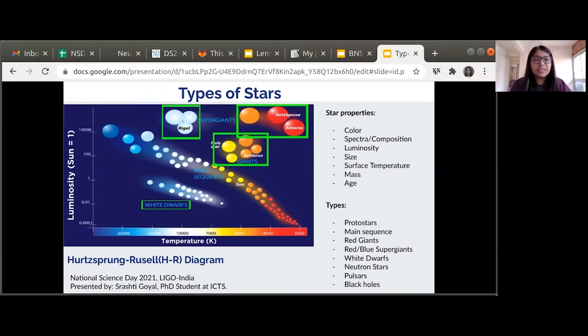Ever since people started observing stars using telescopes, they tried to classify them on the basis of their colors. Later, they could measure the spectrum of the light coming from the stars, the luminosity, and other properties. From the spectra and the brightness of the stars, using the laws of thermodynamics, we can calculate the surface temperature of the stars.